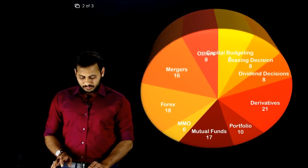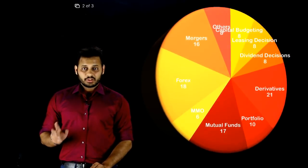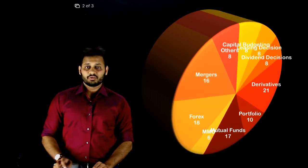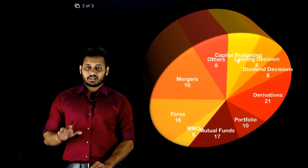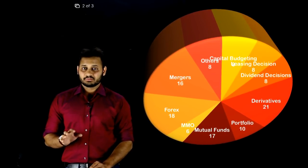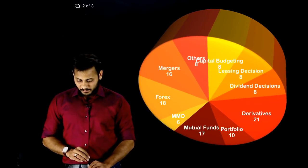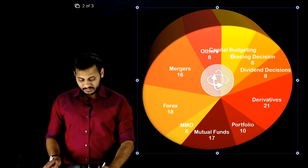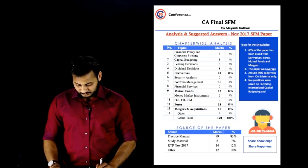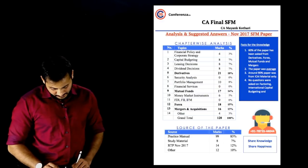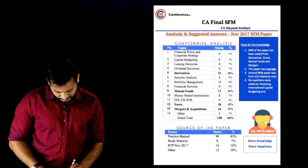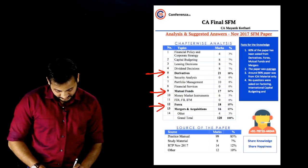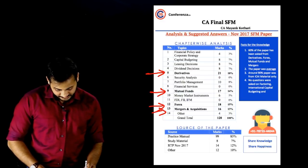So if you look overall, Derivatives, Mutual Funds, Forex, and Mergers together — around 60% of the paper came from these four chapters. And if we analyze the institute's study material, what we find is: Derivatives 21, Mutual Funds 17, Forex 18, and Mergers 16 — overall, 60 marks of the paper came from just 4 chapters.